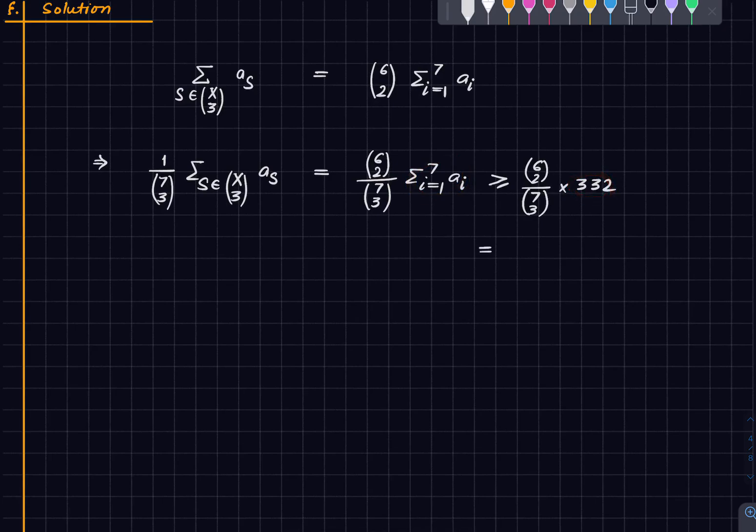And now we compute this so this is just a mindless computation. All right so if we cancel out we get it goes away that goes away this goes away. So this is 3 by 7 into 332. And this you can convince is at least 142.